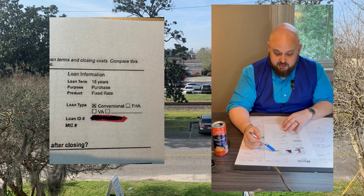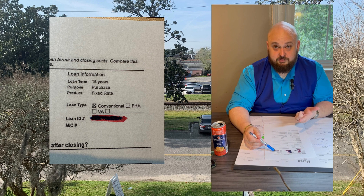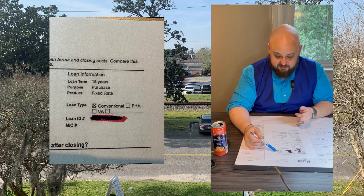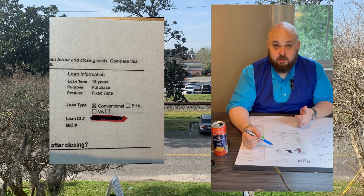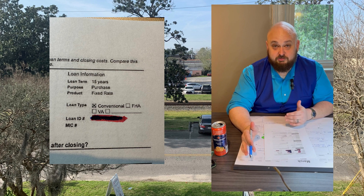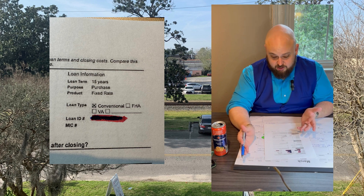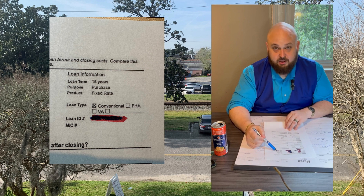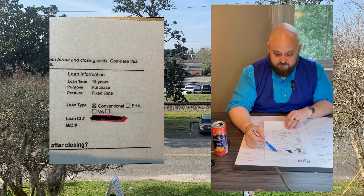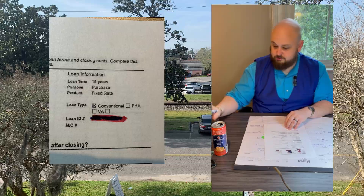And then the loan type. There are three options: conventional, FHA, and VA. In this case, it's conventional. I will have further videos later about what the differences are between an FHA loan, a VA loan, and a conventional loan. But suffice it to know that for now, this is a 15-year fixed rate conventional loan.